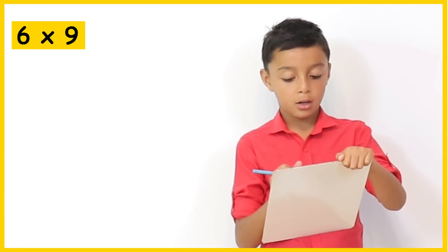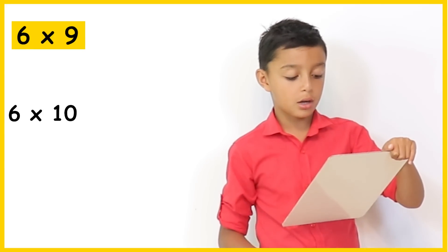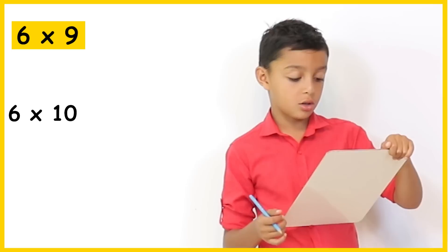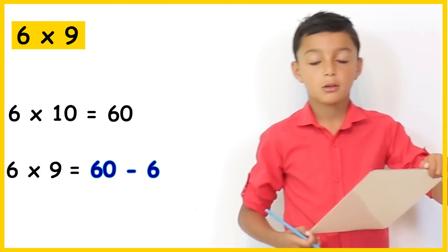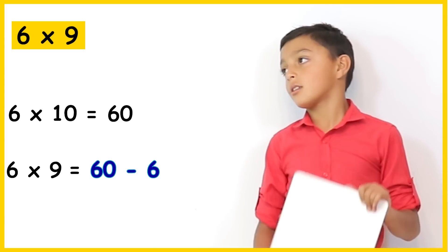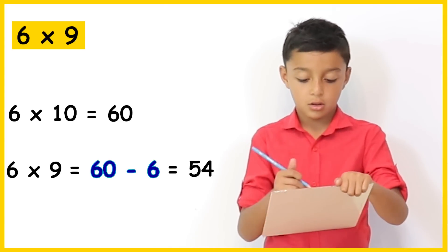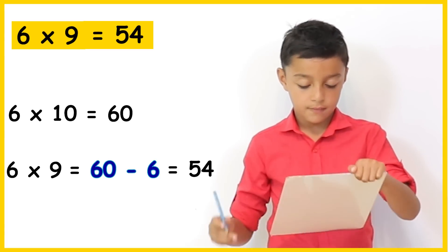Let's look at the next question. 6 times 9. 6 times 9. So we can do 6 times 10 which is 60 and then take away 6. 60 take away 6 is 54. Excellent. So the answer is 54. Brilliant.